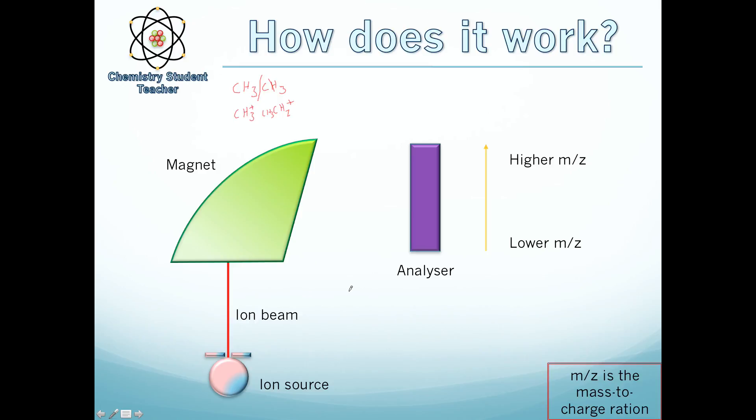So you get these ions created, and they're then focused in a beam, represented by this red line, and accelerated up. And this hits a powerful electromagnet. Just to say this all happens in a vacuum, so there's no interference from outside.